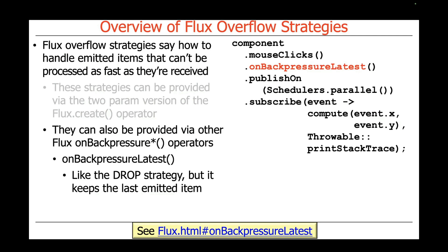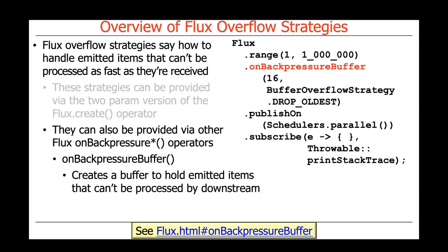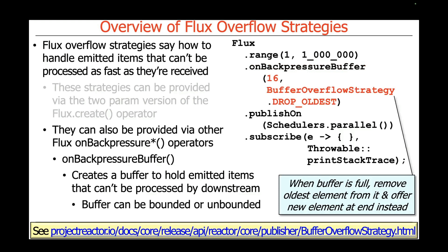Here's another example: onBackPressureLatest. This is like the drop strategy but it only keeps the last item. This is suited for mouse clicks as opposed to mouse moves — we only keep the latest mouse click, which is a sensible thing to do. Then there's onBackPressureBuffer, which creates a buffer to hold emitted items that can't be processed by the downstream right away. You can indicate how big the buffer should be — for example, 16 elements — and if the buffer's full, remove the oldest element and use the newer one instead. So you can make your buffers bounded or unbounded, with an additional policy for what to do when the buffer is full, giving you tremendous control over overflow strategies for non-backpressure-aware publishers and subscribers.